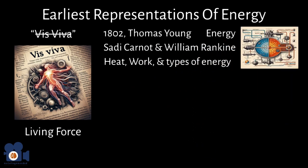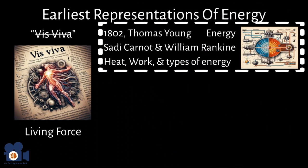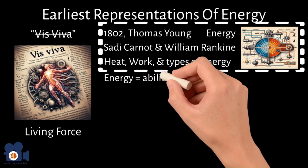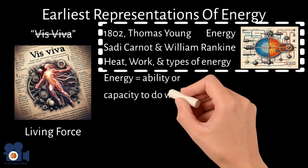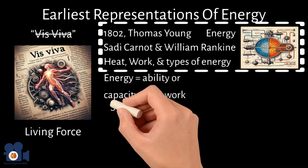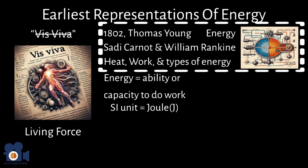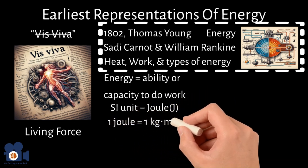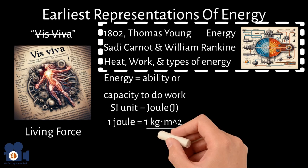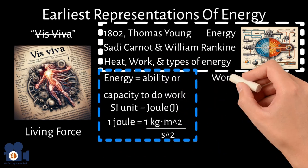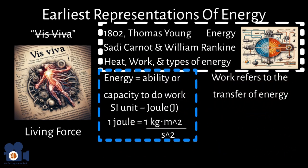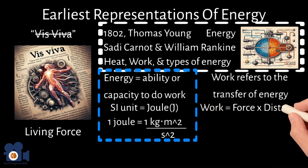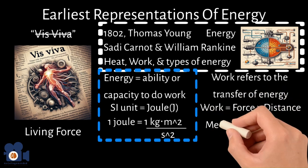The definition of energy as we know it today is a quantity used to describe the ability or capacity to do work, with the SI unit being the joule (J), where one joule equals one kilogram times meter squared divided by second squared. Work refers to the transfer of energy between objects or systems when a force is applied over a distance, with the equation work equals force times distance, and is also measured in joules.